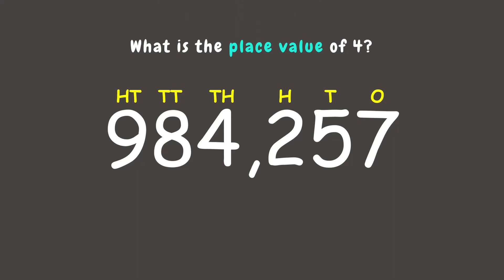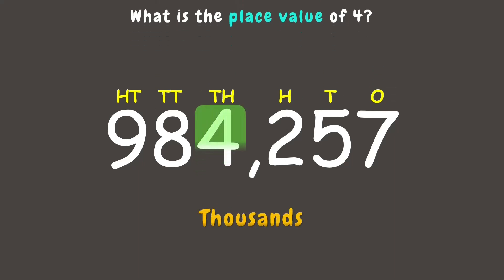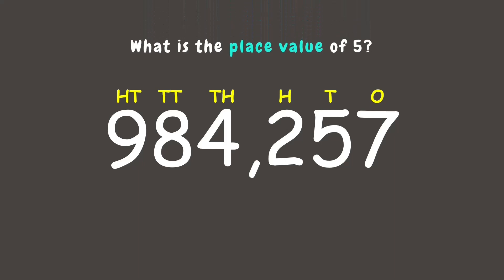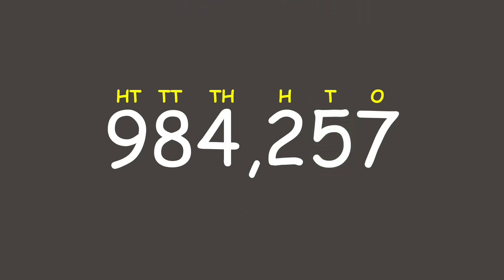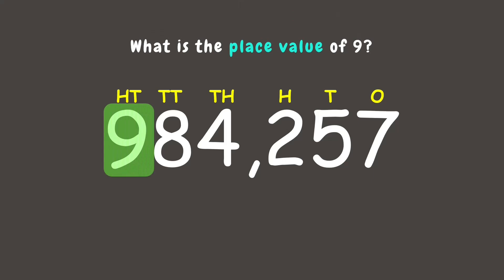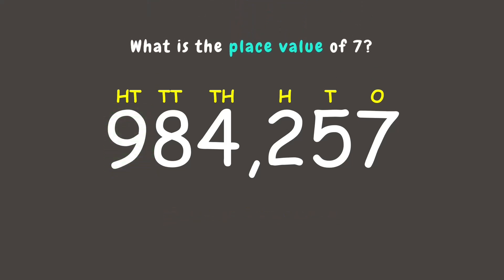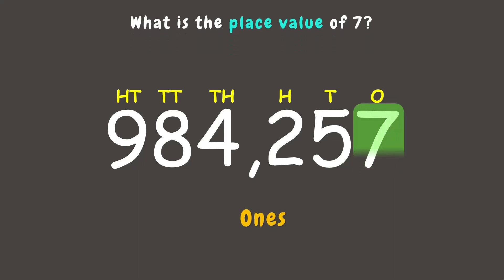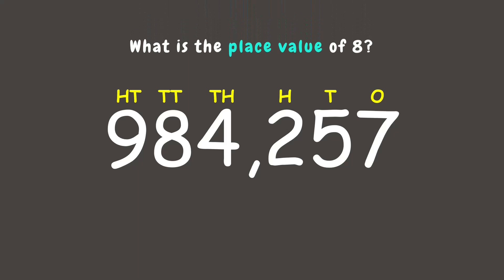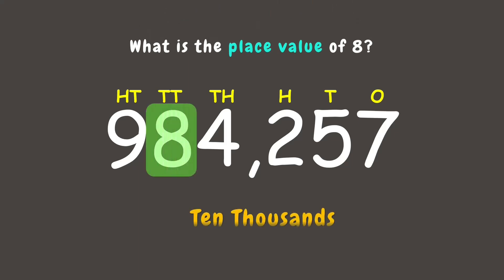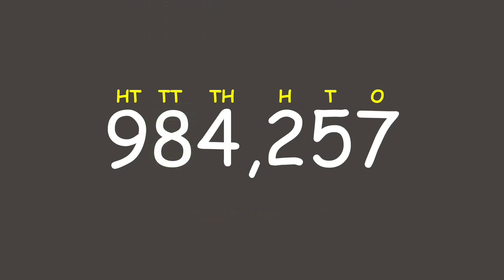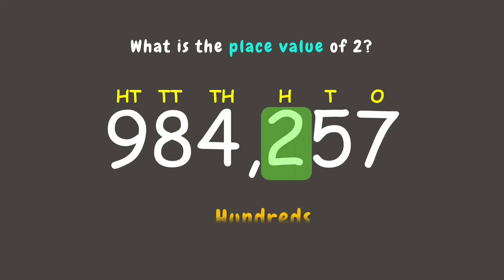Now let's answer some questions. What is the place value of four? It is in the thousands place. What about five? It is in the tens place. What place value is nine? If you answered hundred-thousands, that is correct. What about seven? It is in the ones place. What about eight? It is in the ten-thousands place. What is the place value of two? It is in the hundreds place.